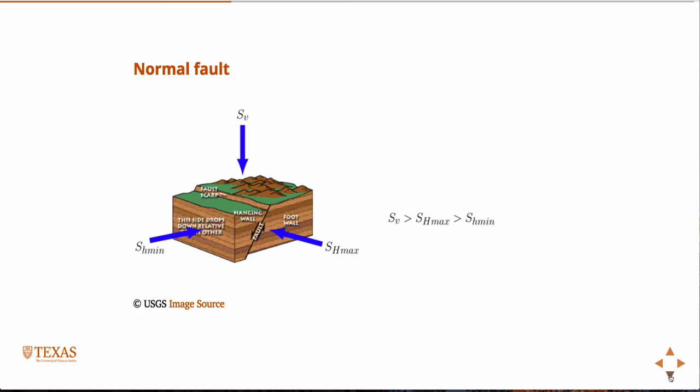If the vertical stress is greater than the two horizontal stresses, that's going to force the hanging wall down, and that's going to be a normal faulting regime.